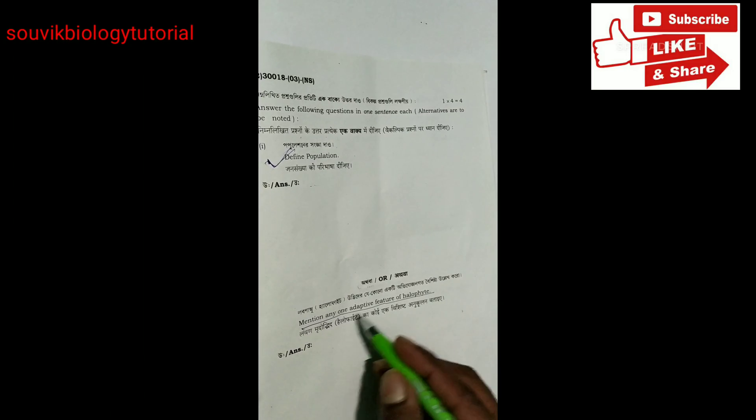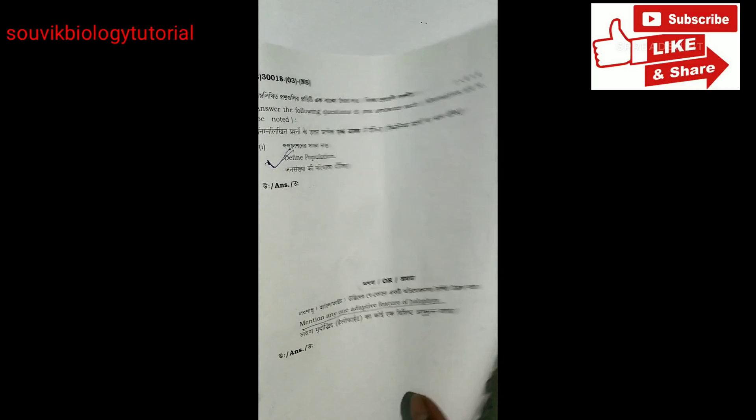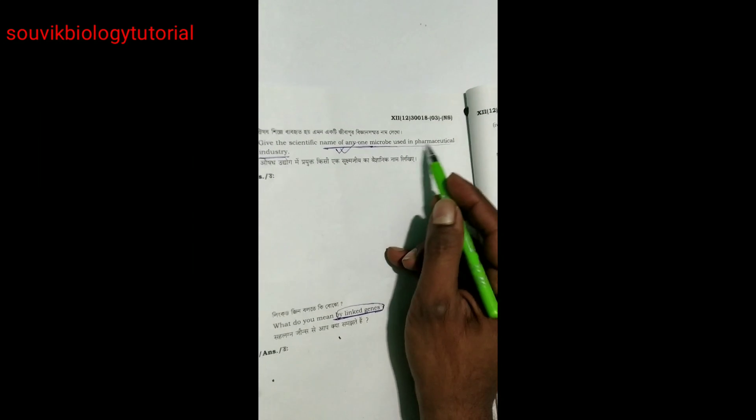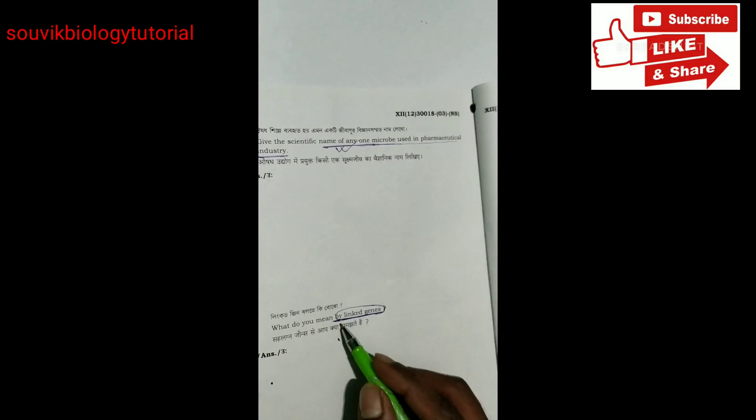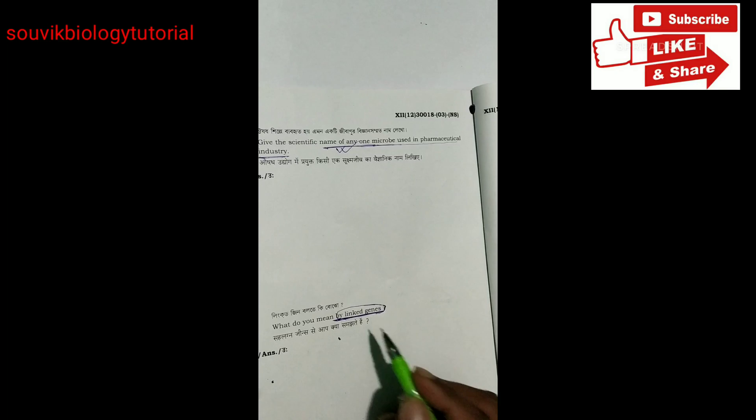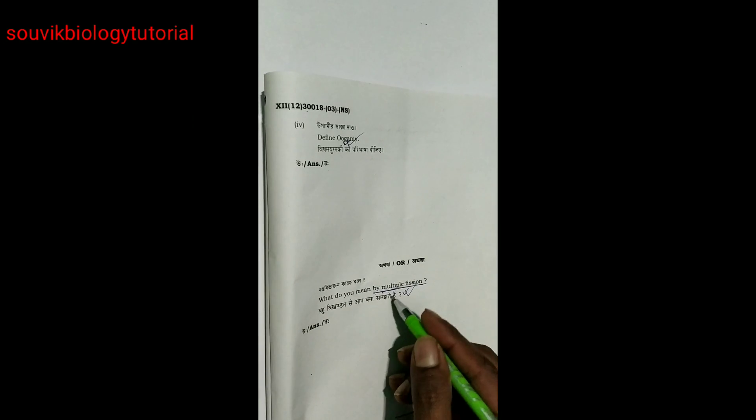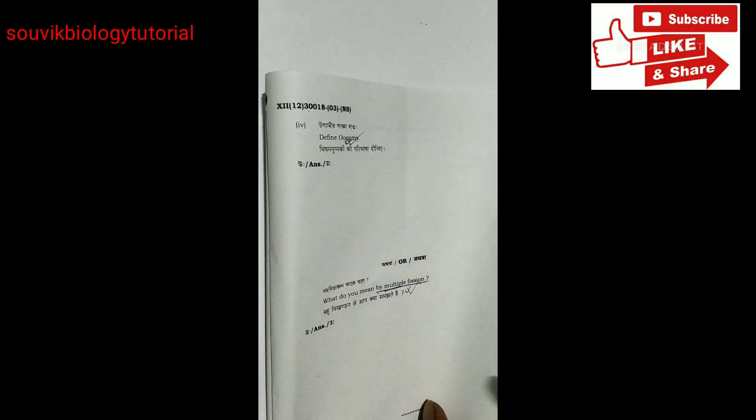Next. Define population. Mention any one adaptive feature of halophyte. These are the questions. Four questions. Next. Name one of the microbe used in pharmaceutical industry. What is linked gene? Define Fukugami. And what do you mean by multiple fission? This is the short question.